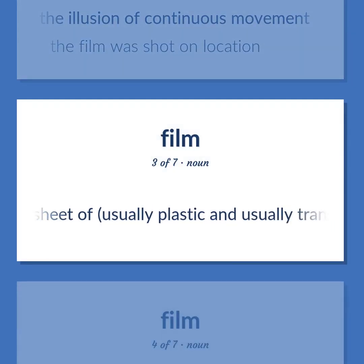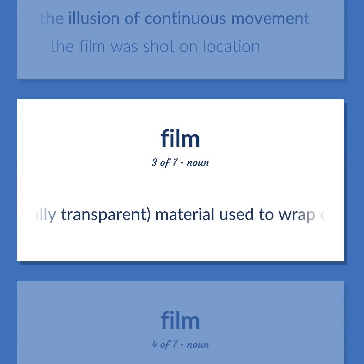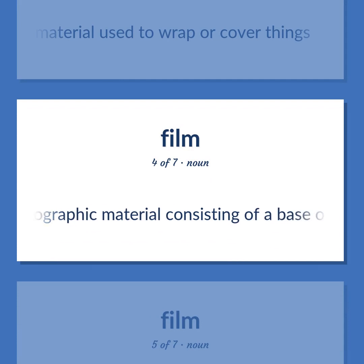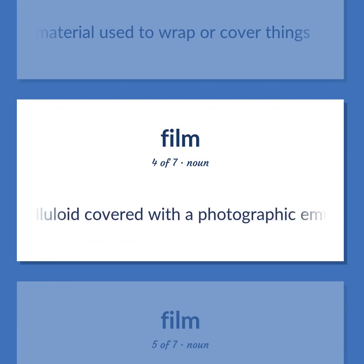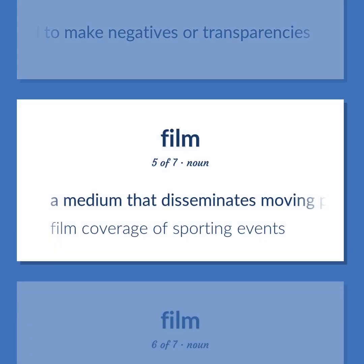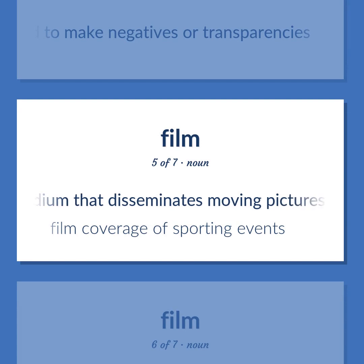Film (noun): A thin sheet of, usually plastic and usually transparent, material used to wrap or cover things. Also, photographic material consisting of a base of celluloid covered with a photographic emulsion, used to make negatives or transparencies. Also, a medium that disseminates moving pictures. Example: Film coverage of sporting events.